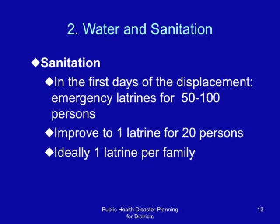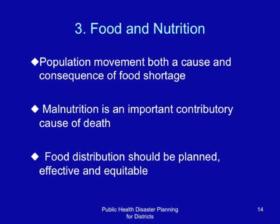Food and nutrition: population movement is both a cause and a consequence of food shortage. Malnutrition is an important contributory cause of death during complex emergencies. Food distribution should be planned, effective, and equitable.